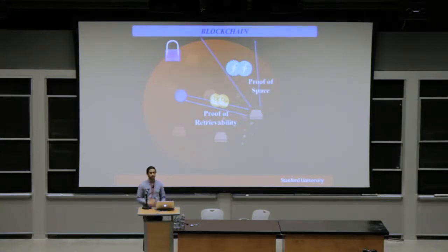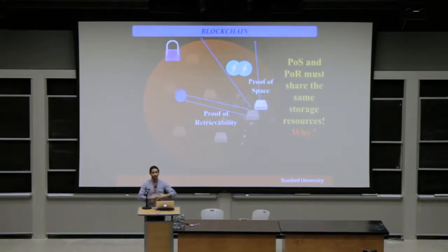What you really need here is a proof of space, a proof that you're actually using storage resources as your work. The problem is we can't just use a proof of space and a proof of retrievability separately. What would happen if we dedicated one disk to giving a proof of space to the blockchain, and then the blockchain would also check that we're also producing some proof of retrievability? When we want to produce a retrievability for another peer on the network, we'd have to use a separate disk to store their file.